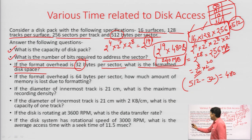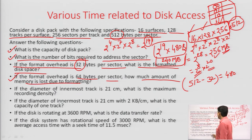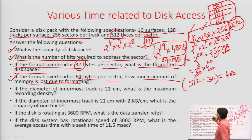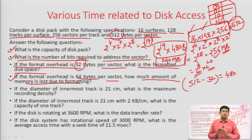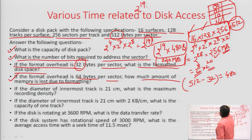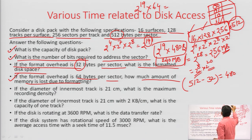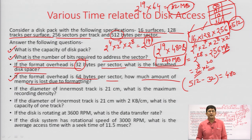If the format overhead is 64 bytes per sector, how much memory is lost due to formatting? You multiply the number of sectors by the format overhead: 2^19 × 64 bytes of memory is wasted. Taking 2 to the power out, 32 megabytes is the total memory lost due to formatting. Similarly, other parameters can be found in this question.